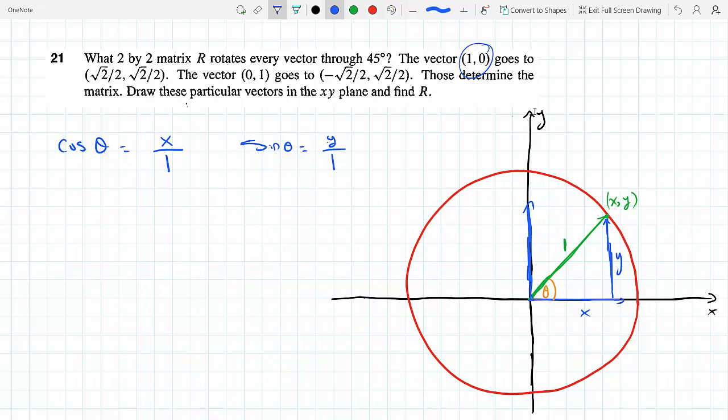So that means if I need to rotate the vector, this vector here by 45 degrees, my rotation matrix would have to be cosine and sine.